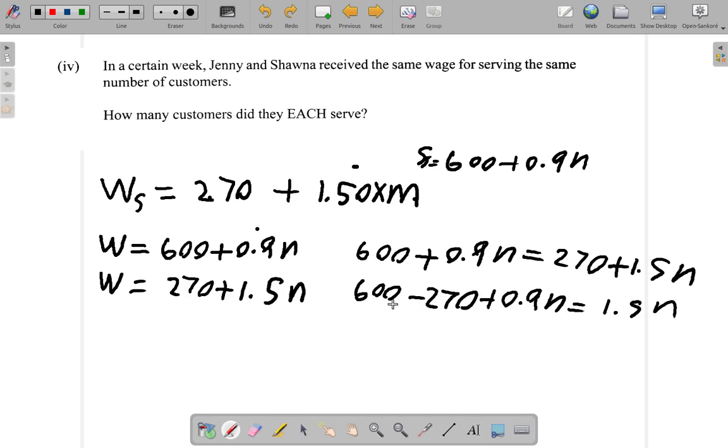Now this is 600 minus 270. That's going to be what? 600 minus 200, that's 400. So you have 400. I just split this up: 600 minus 200, that's 400, then minus 70 gives you 330.